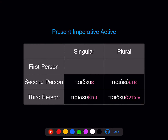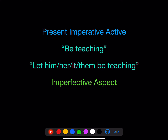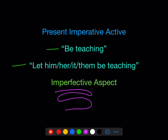You'll remember the present imperative active: take the stem from the first principal part, and then you add the imperative active personal endings — e and eto, ete and onton. Remember, there is no first person imperative. We translate those in second person as 'be teaching,' and in third person singular and plural as 'let him, her, it, them be teaching.' Remember, the present imperative active always has imperfective aspect.